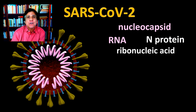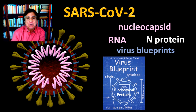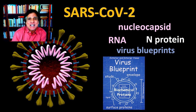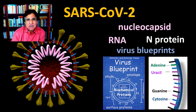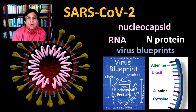RNA, short for ribonucleic acid, is a nucleic acid which contains the blueprints for this virus. Those blueprints are found in a sequence of nucleotides, and this genetic code calls for certain amino acids, which are then put together to form the proteins that make up this virus.